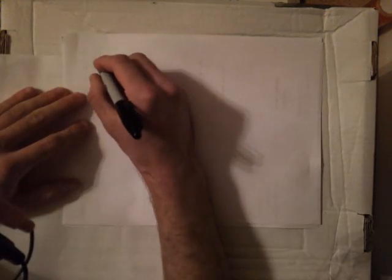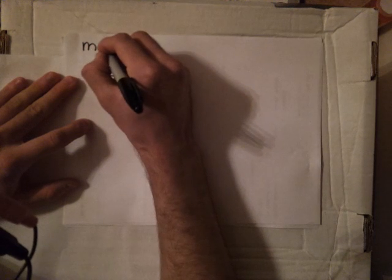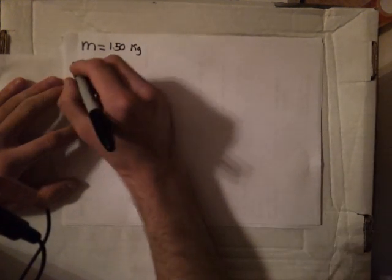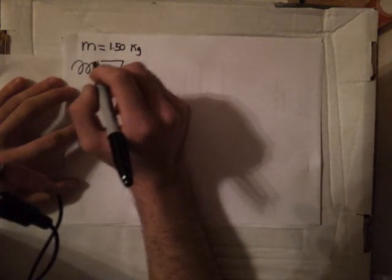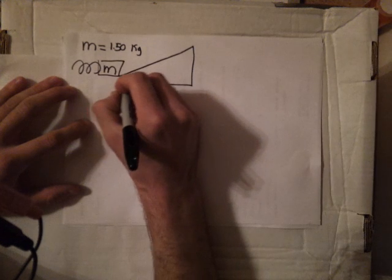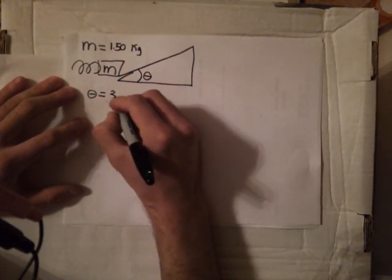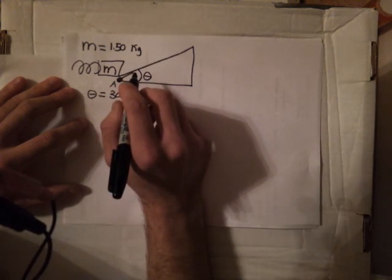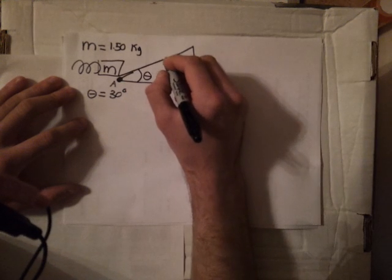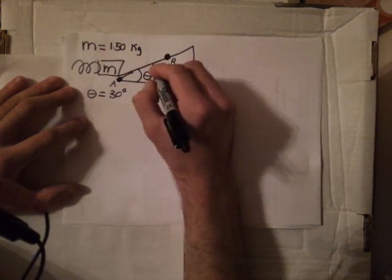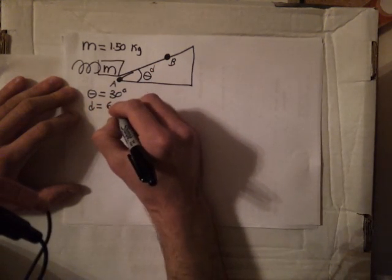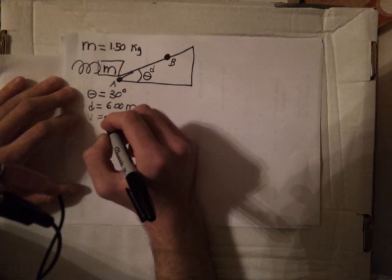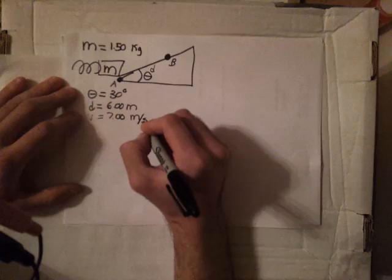We're told that we have a wooden block with mass m, equal to 1.50 kilograms, and it is at the bottom of a spring which is compressed — so that means it has potential energy — and it's at the bottom of an incline with an angle equal to 30 degrees, called point A. When the spring is released, it projects the block up the incline. At point B, which is at distance D equal to 6.00 meters up the incline, its velocity is equal to 7.00 meters per second.